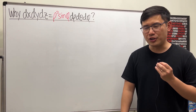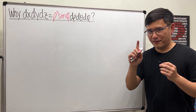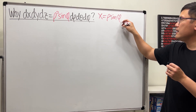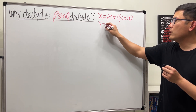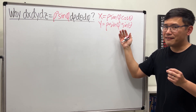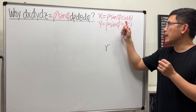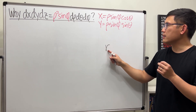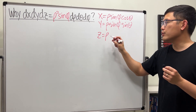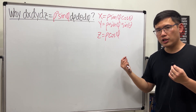Today I will show you how to use the Jacobian to show that we need the ρ²sinφ when we go from rectangular to spherical. First we need the conversion formulas: x = ρsinφ·cosθ, y = ρsinφ·sinθ. Notice sinφ represents the r in polar coordinates, so we really just have x = r·cosθ and y = r·sinθ. For z we have ρcosφ. Make sure to check out my previous video to see how we derive these formulas.